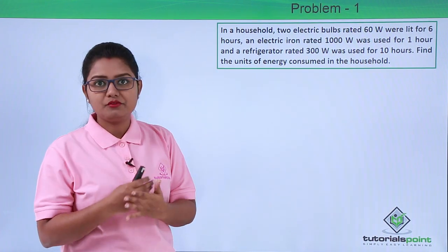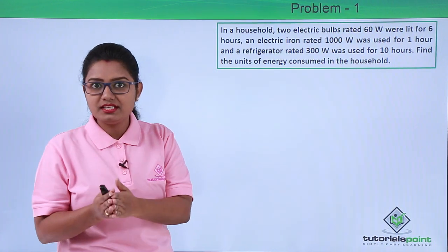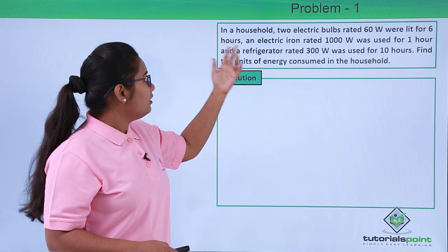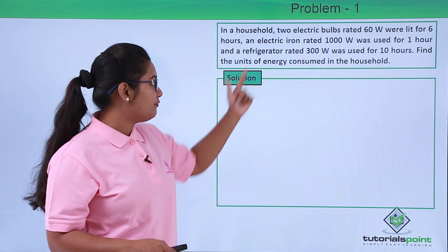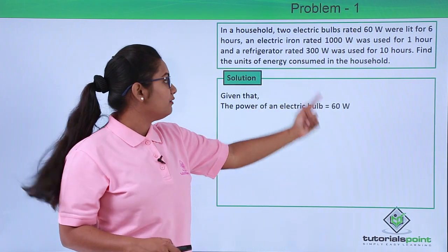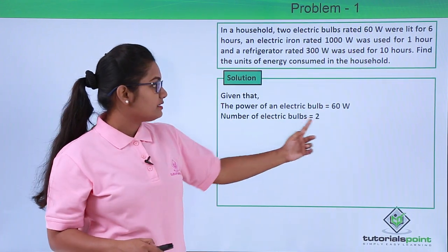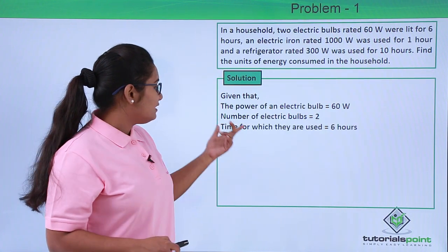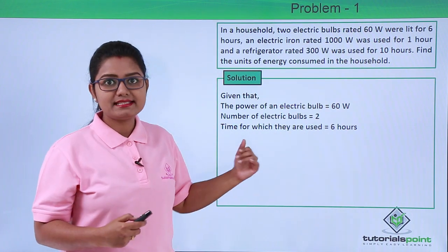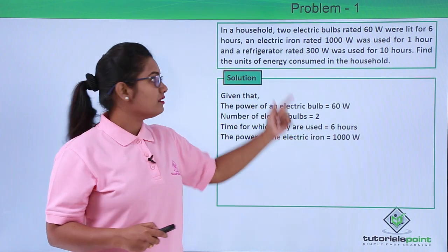These were a few electrical appliances being used in a particular household for a certain period of time. We need to find out how many units of energy the household consumed in that particular day. First, we'll list out the information from the question: the power of an electric bulb is 60 watts, and there are two such bulbs. They were used for six hours each.